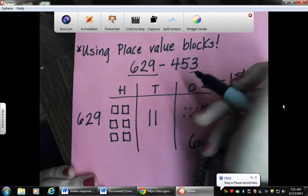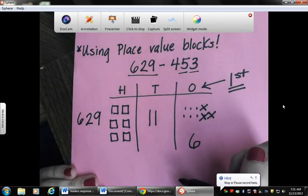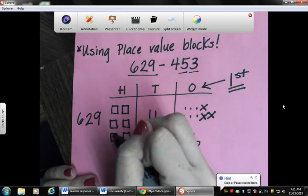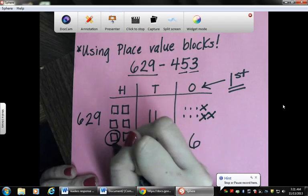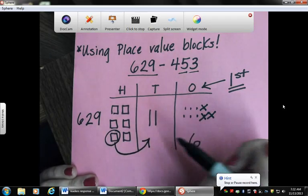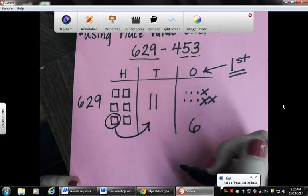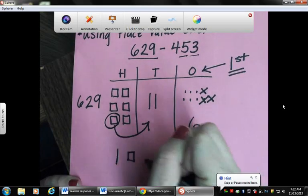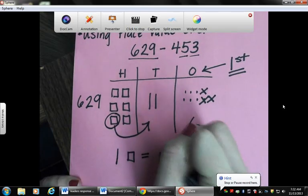Then we're looking at our tens. We need to take away five tens. Hmm, but we only have two here. So we need to take one of these hundreds blocks and break it into ten tens blocks. Because remember, one hundreds block equals ten tens blocks.